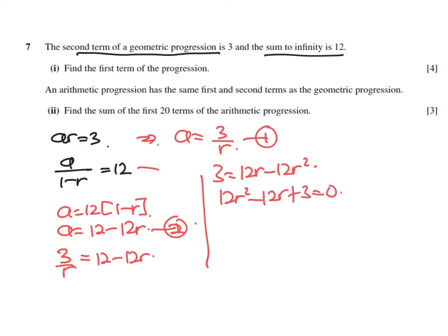This is definitely a quadratic equation. So 12r squared minus 12r plus 3 equals 0. Divide everything by 3, so you get 4r squared minus 4r plus 1 equals 0. Solving that you get r equals 0.5. R is not what I want, I want a. So substitute that into the first equation: a equals 3 over r, so 3 over 0.5. Therefore a equals positive 6.